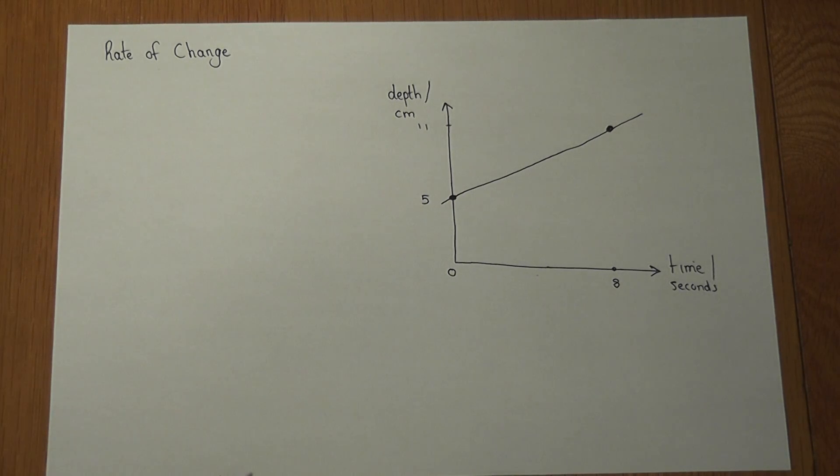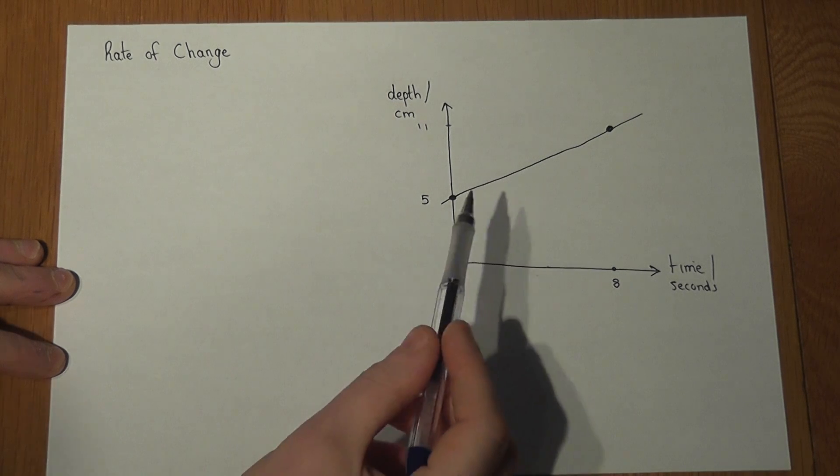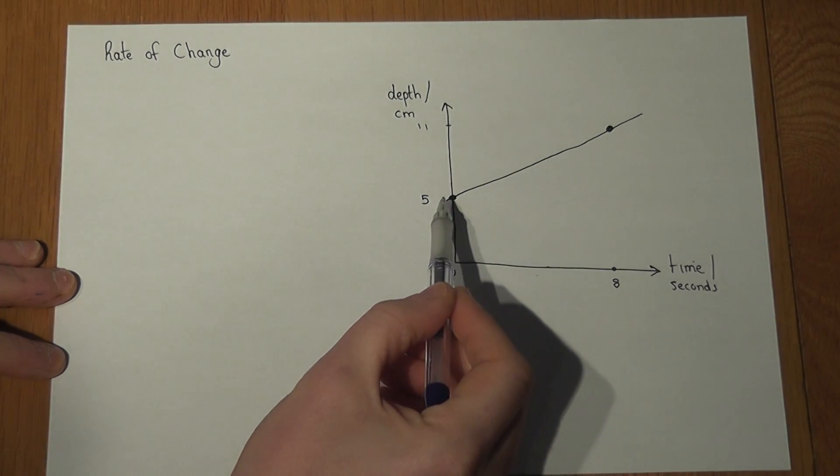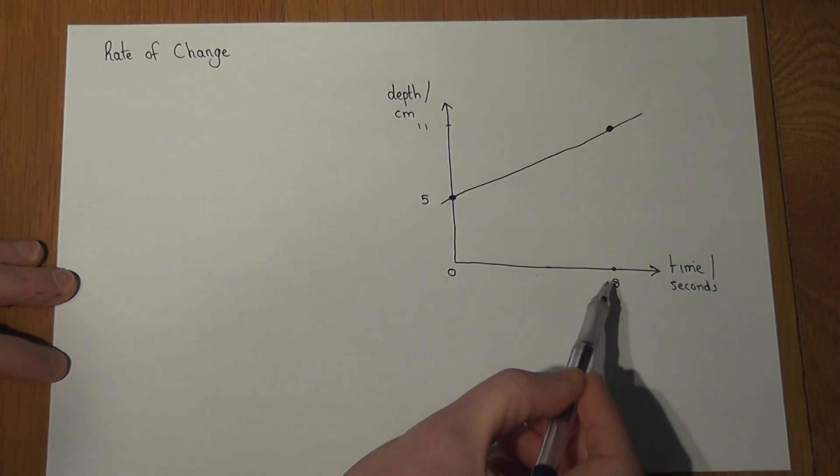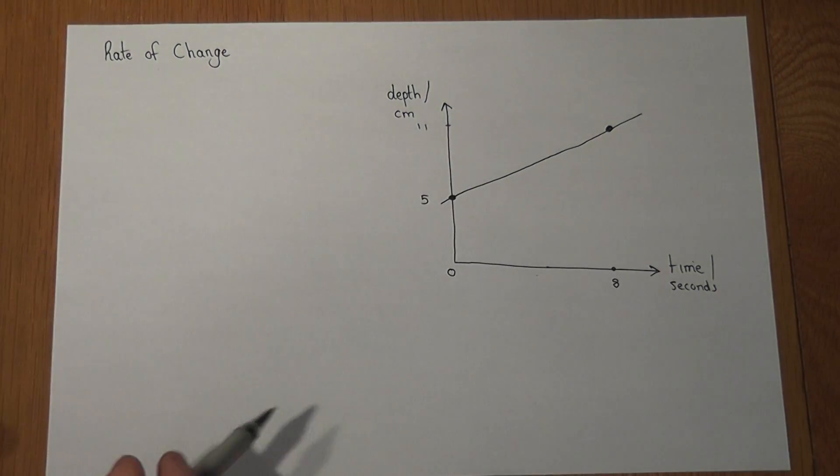This short video reviews a simple but high-grade idea called rate of change. In this graph we've got a container which is being filled with water and it starts off with five centimeters of water in it, and after eight seconds the depth of the water is now 11 centimeters.